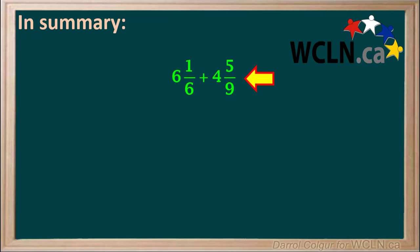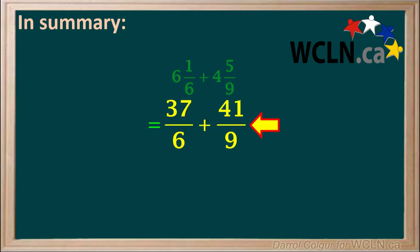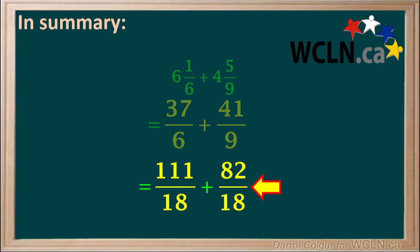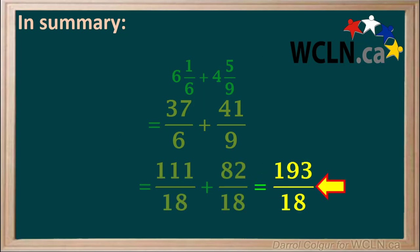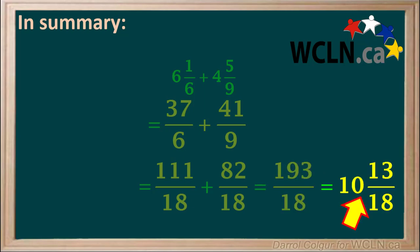To summarize, we were asked to add 6 and 1 sixth plus 4 and 5 ninths. Changing these to improper fractions gives 37 over 6 plus 41 over 9. Writing with the common denominator 30 gives 111 over 18 plus 82 over 18. Adding these gives 193 over 18, which cannot be reduced, but must be converted to the mixed number 10 and 13 eighteenths. It would be good to get lots of practice with questions like this. Thank you very much.